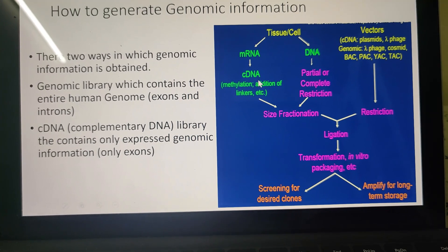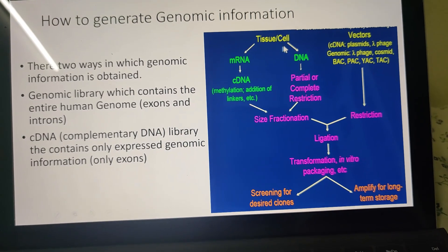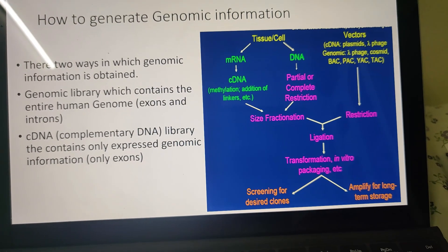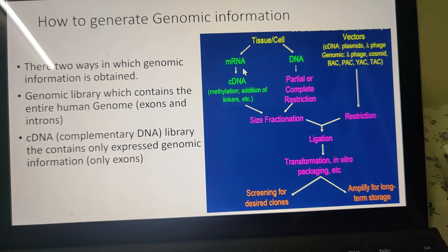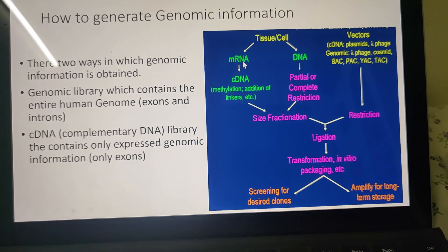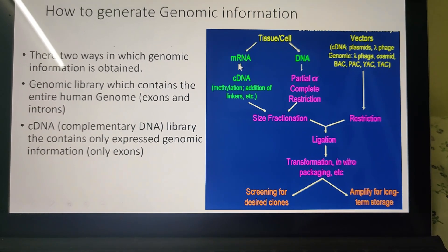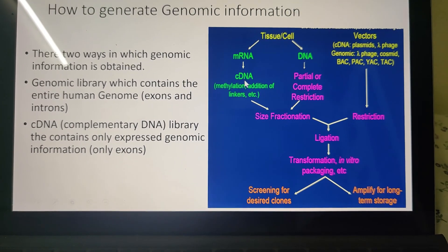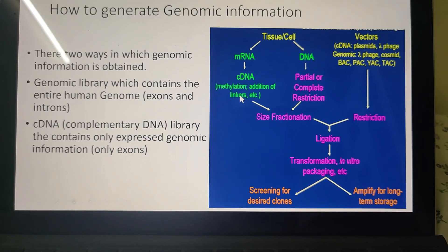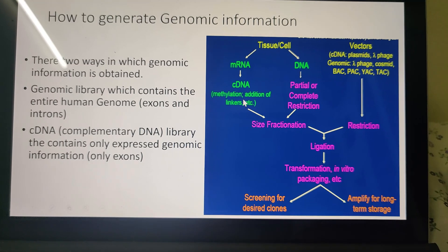Another way is cDNA — complementary DNA. For this, you select the cell in which you are interested and isolate mRNA. Since we begin with mRNA, it means it is free from introns, meaning it contains only the sequence which gets expressed. From this mRNA, by using reverse transcriptase enzyme, you create complementary DNA. Now you have a double-stranded complementary DNA, and then you cut this cDNA by using any one of the restriction endonucleases.